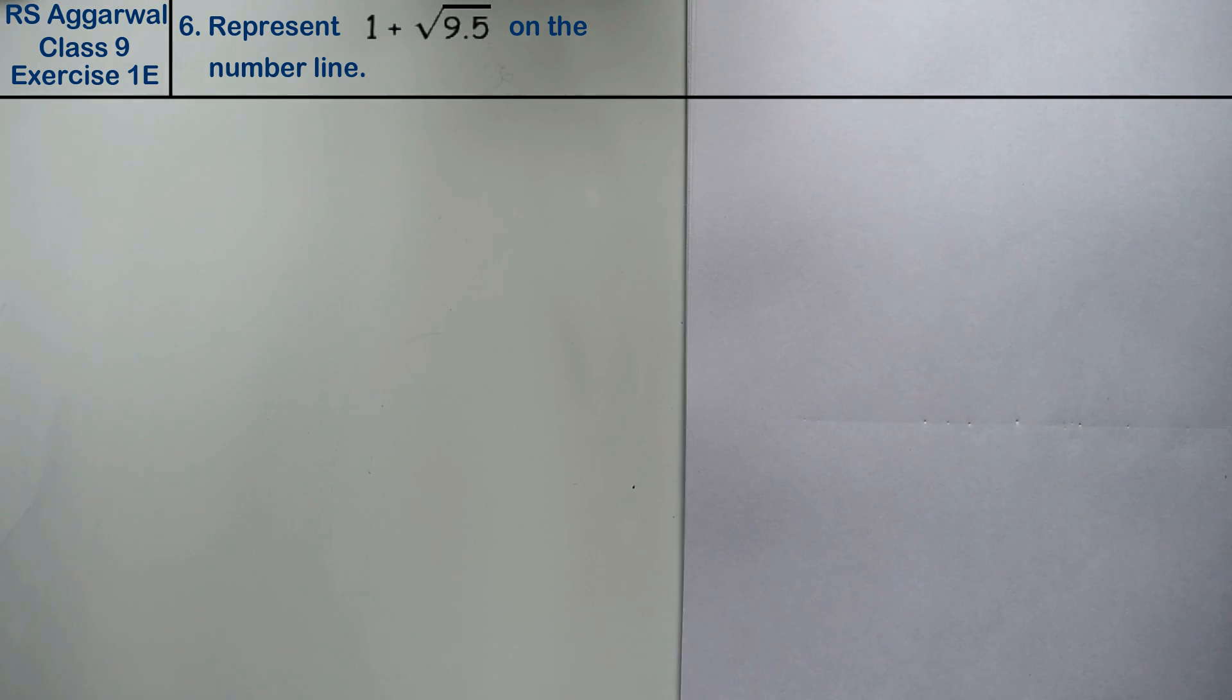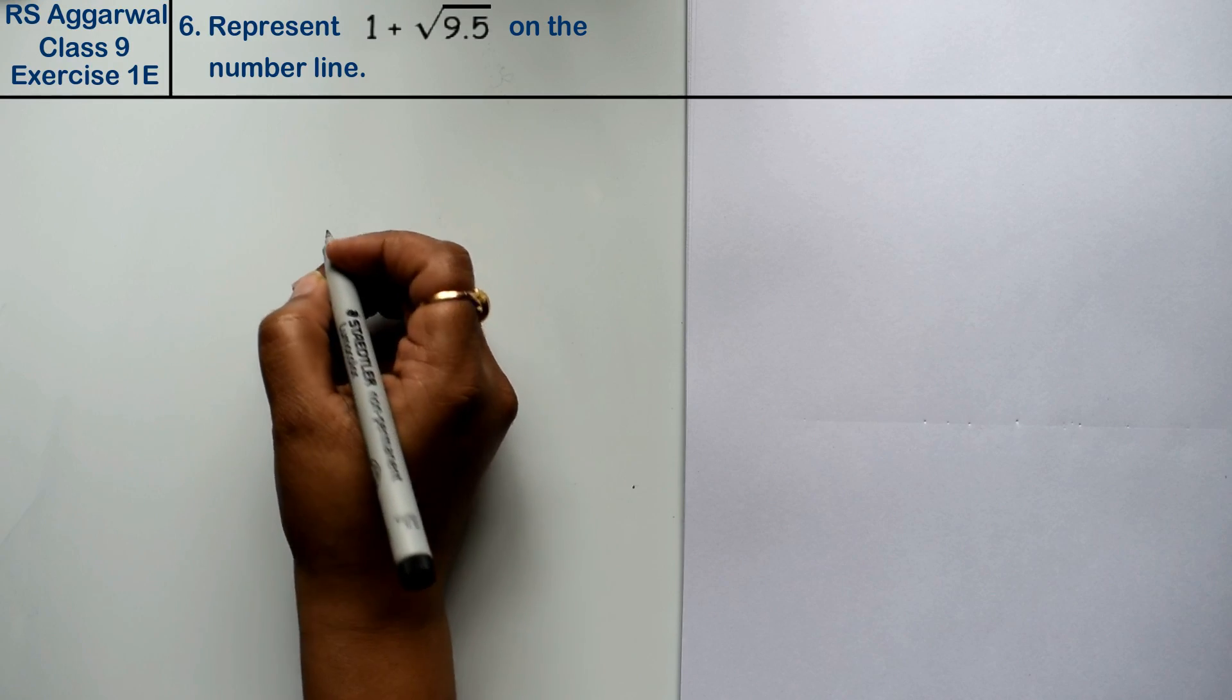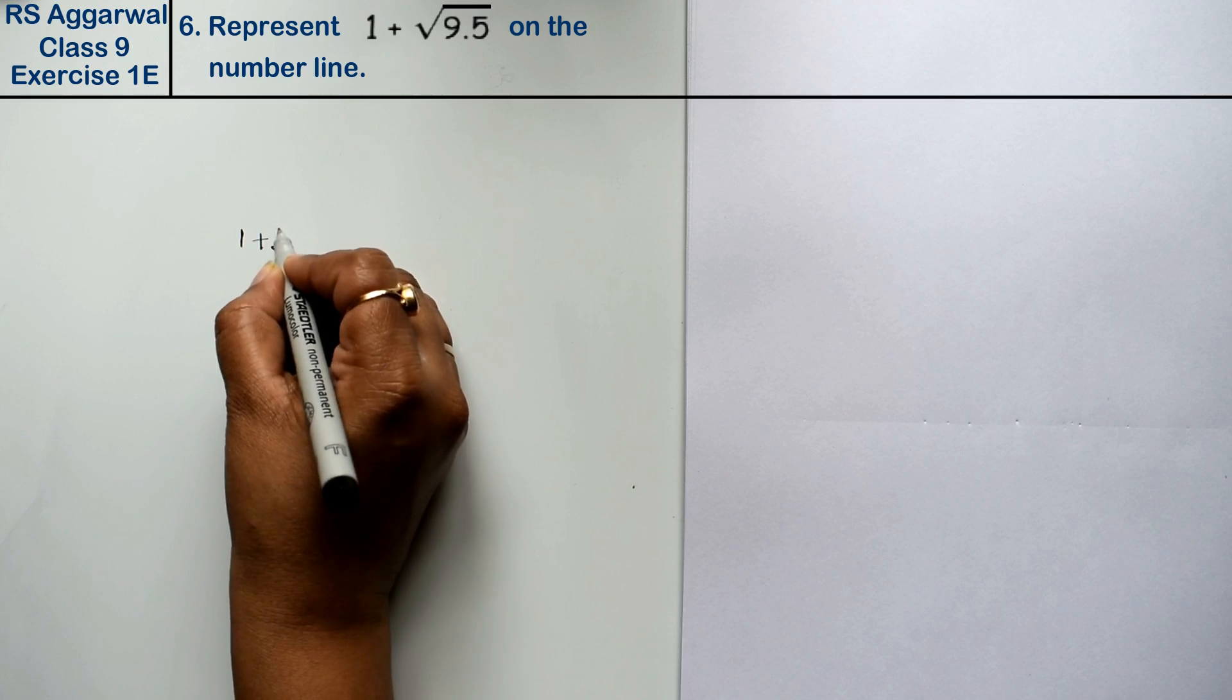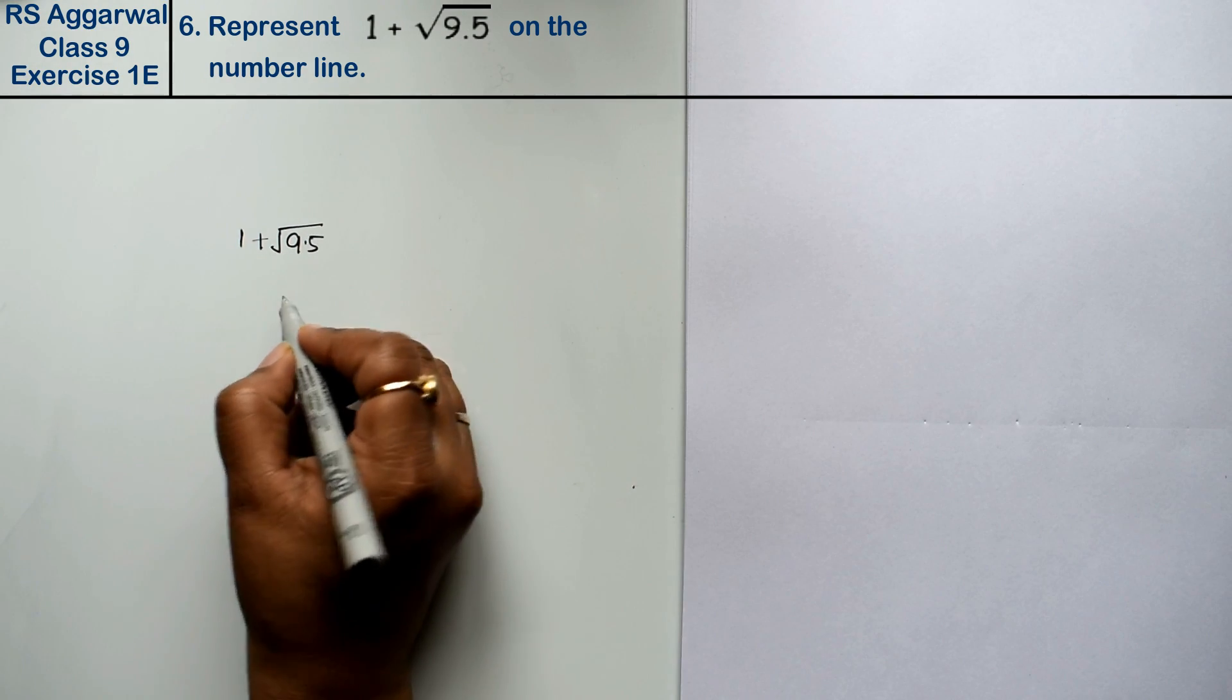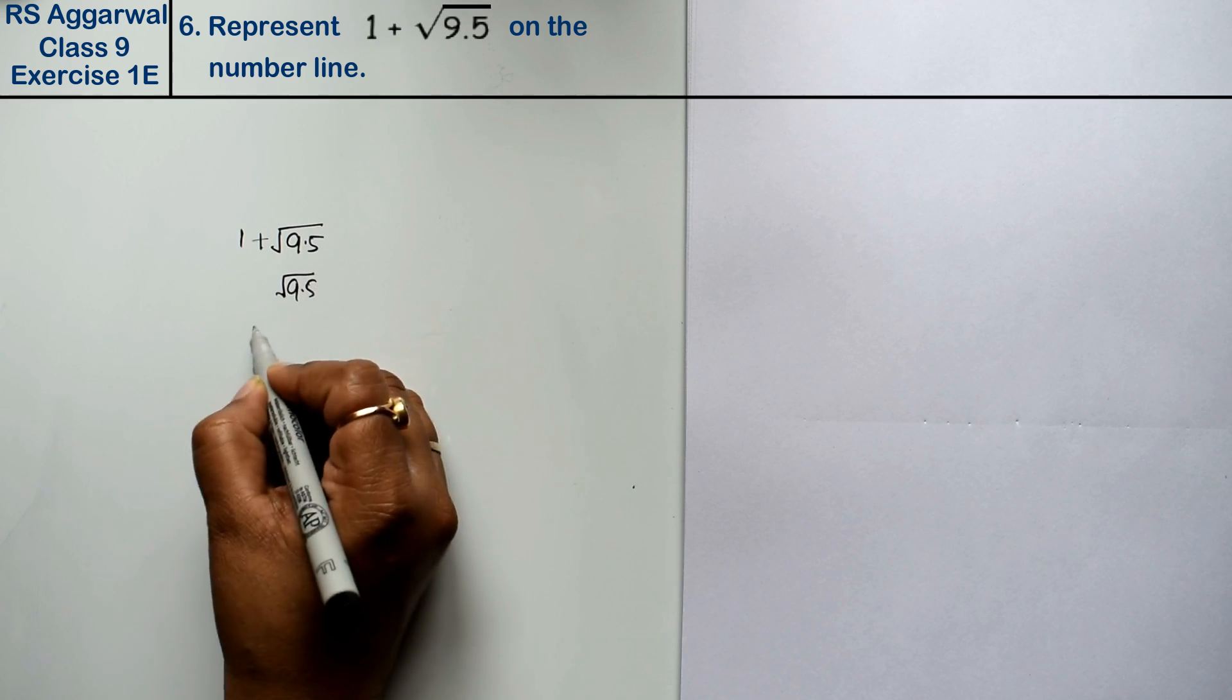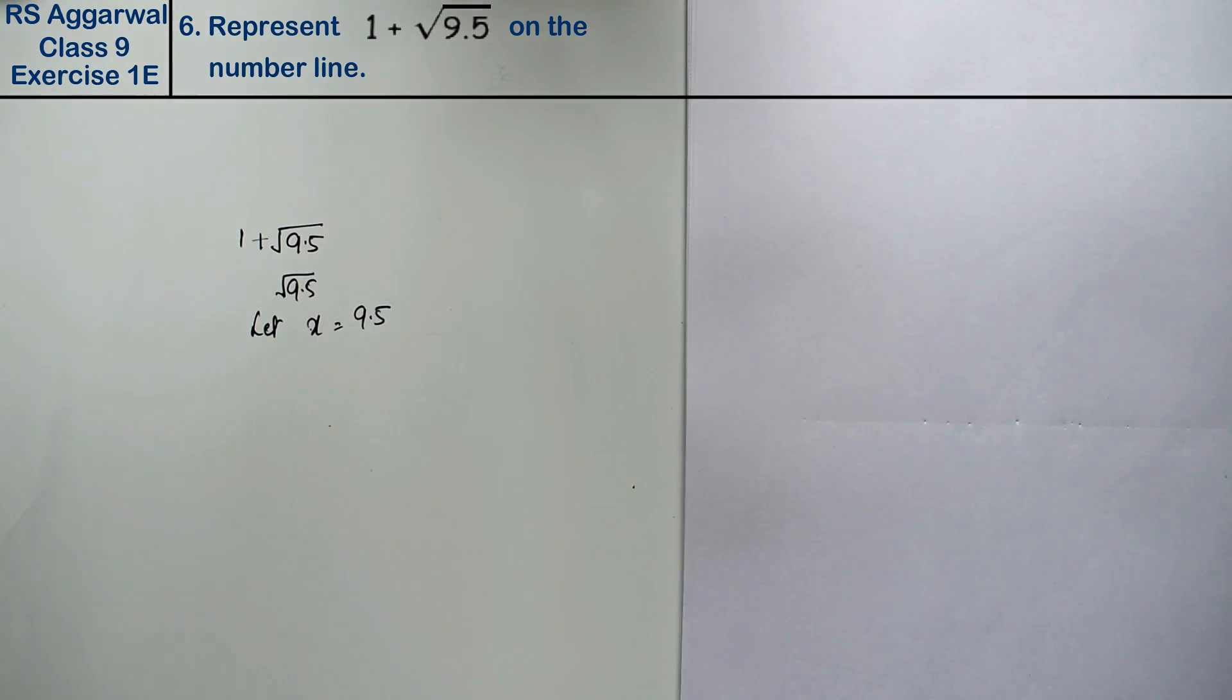Let's do question number 8 of exercise 1E, that is number system. Question number 8 is represent 1 plus square root 9.5 on a number line. Friends, first we will represent root 9.5. Let x equals to 9.5.